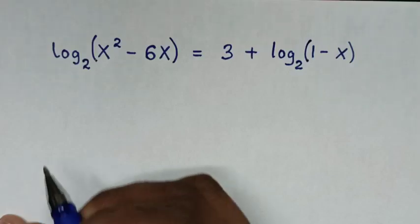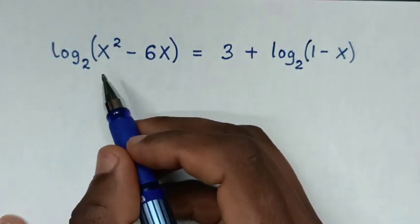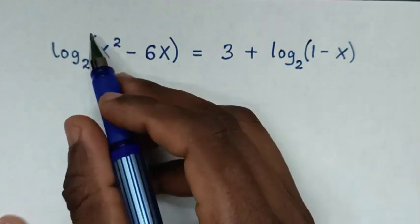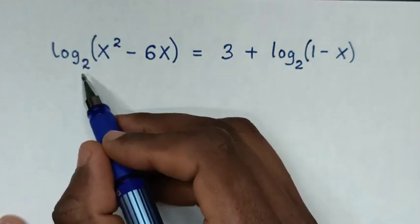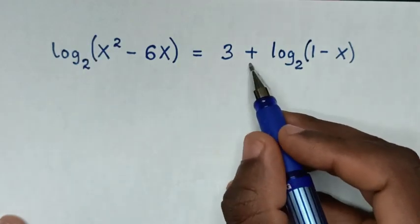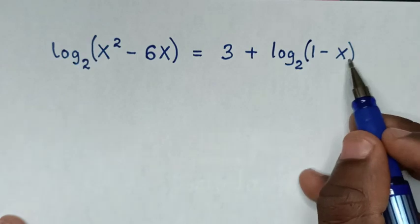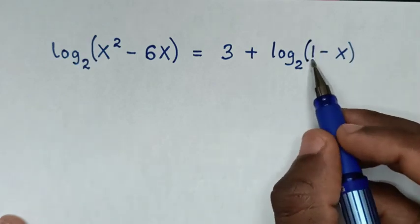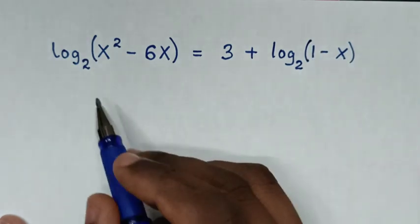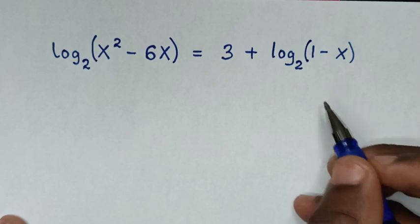Hello guys. How to solve log of (x² - 6x) to base 2 is equal to 3 plus log of (1 - x) to base 2 — to find the values of x from this equation.